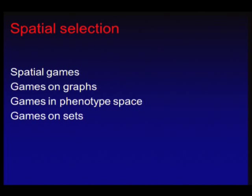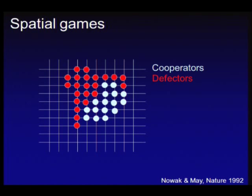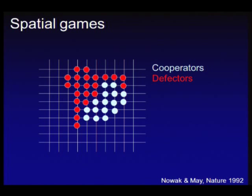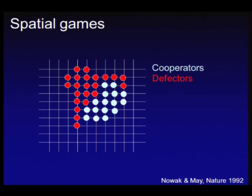The third mechanism is spatial selection — spatial games, games on graphs, games in phenotype space. The idea is that the population is not well mixed but distributed over a spatial area, and neighbors are more likely to interact with each other. Neighbors help each other, and cooperators can cluster together and survive even when surrounded by defectors.